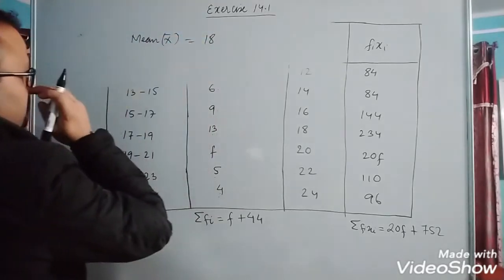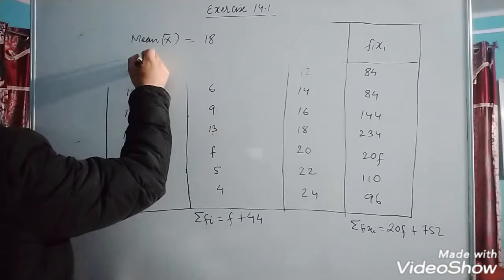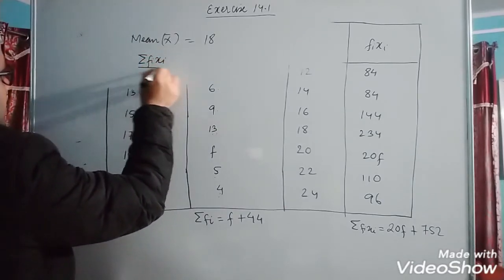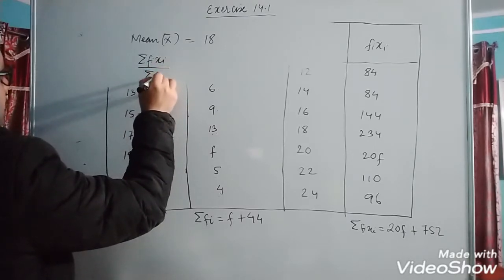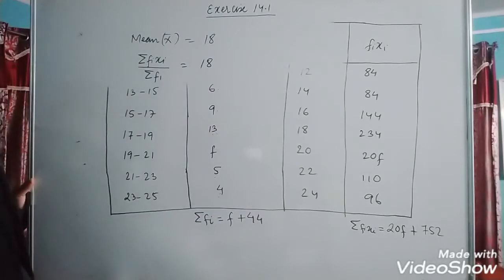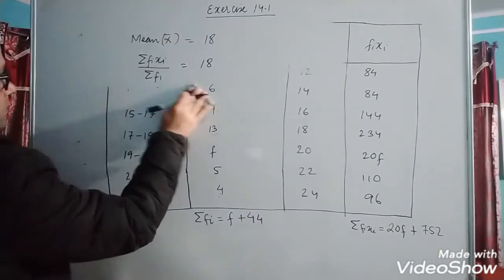Now what is the formula of mean by direct method? It is summation fi xi divided by summation fi equals to 18.